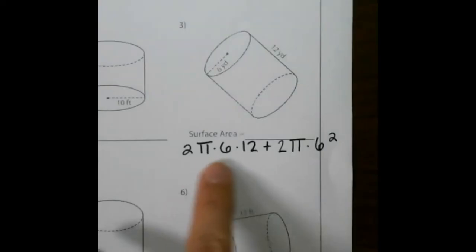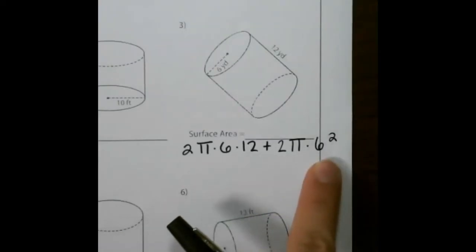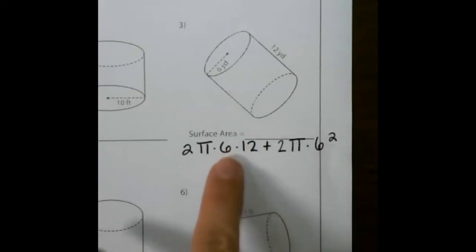Here's another example. Here is the equation or the formula with each number plugged in. Again, the radius is 6 and the height is 12.